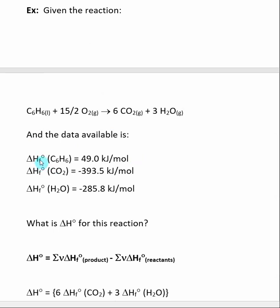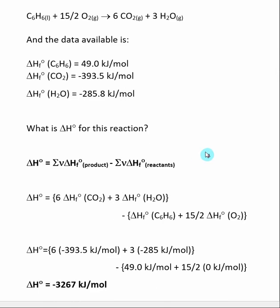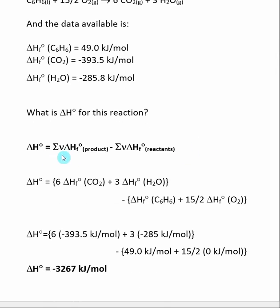So these delta H of formations are constants. You can go and look them up. We can actually calculate the delta H of this reaction just by looking up these constants and doing a calculation. So using this reaction, it is the summation of the delta H of formation of the products times their stoichiometric coefficients.